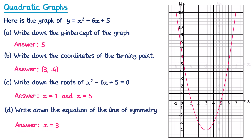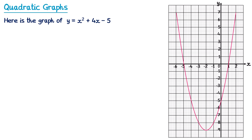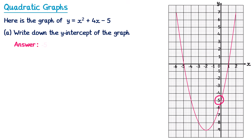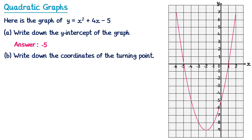Let's try another example. This time we have a different equation: x squared plus 4x minus 5, and here's its graph. Starting with the y-intercept — it crosses the y-axis here, so this time the answer is negative 5. For part b we write down the coordinates of the turning point — that's the point down here where it turns. The x-coordinate is negative 2 and the y-coordinate is negative 9, so the coordinates are negative 2, negative 9.